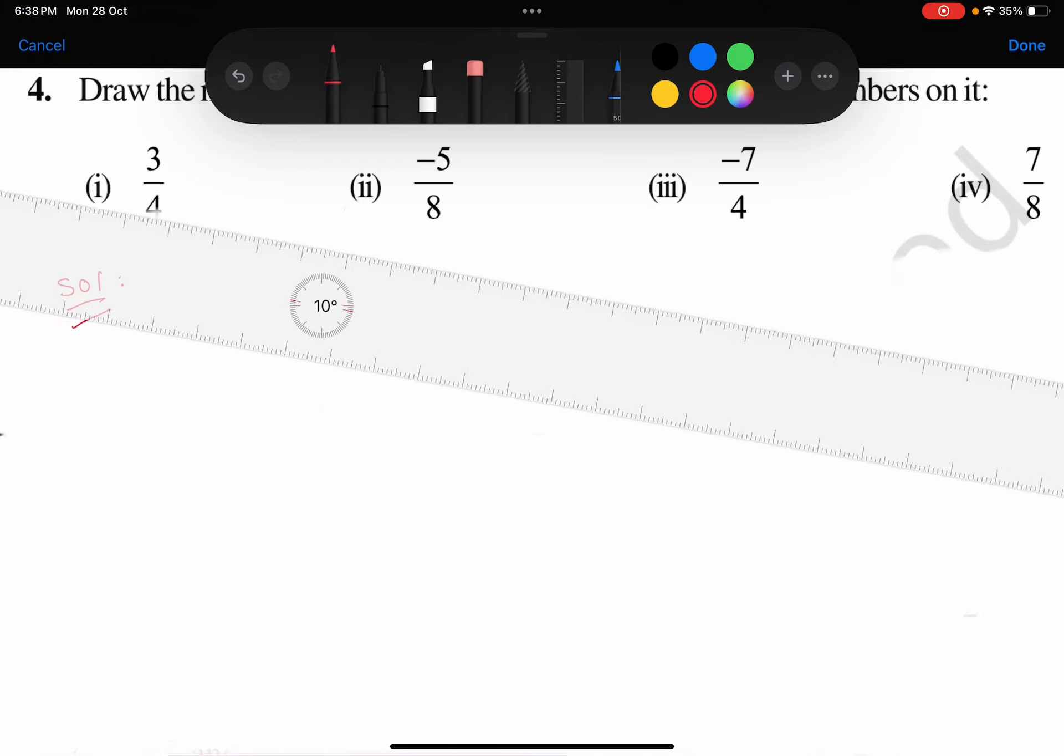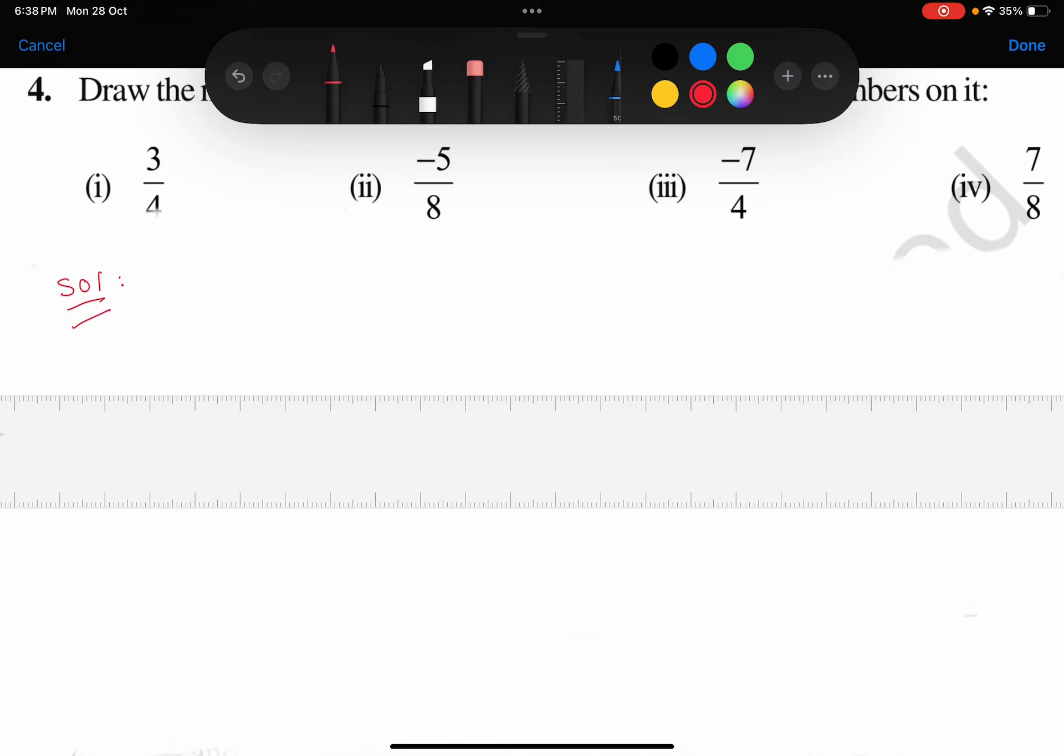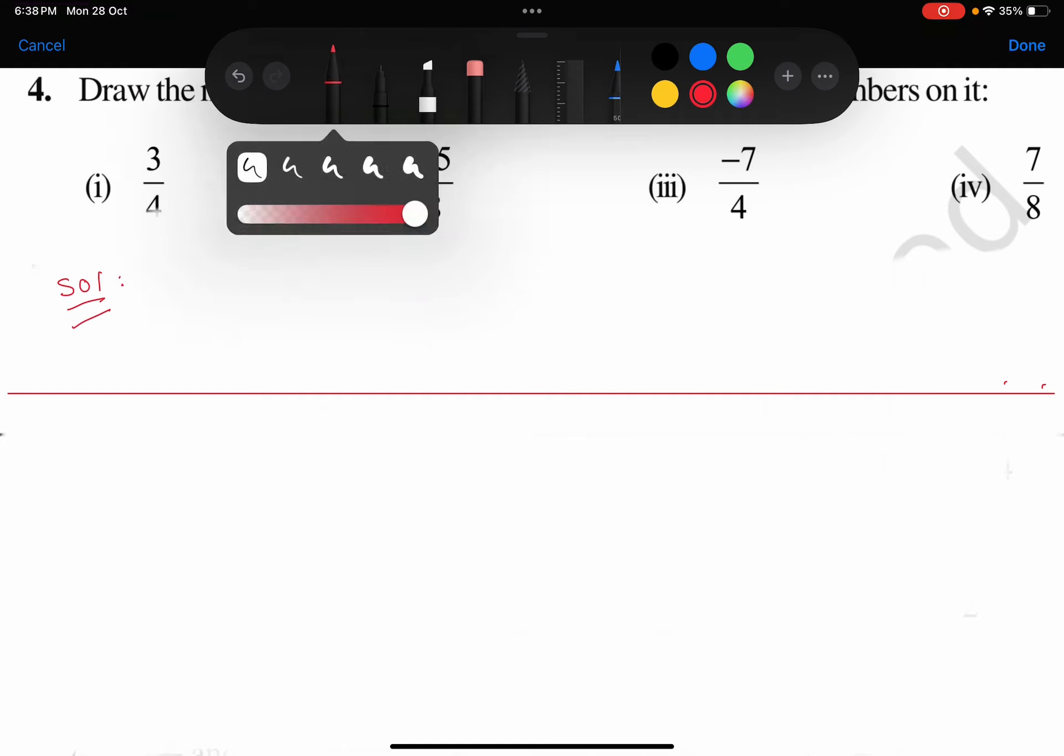I'm using a digital scale to draw from here. I'll take some random points. Now we are going to use it. First, he told us to represent 3 by 4, so we need to represent 3/4.